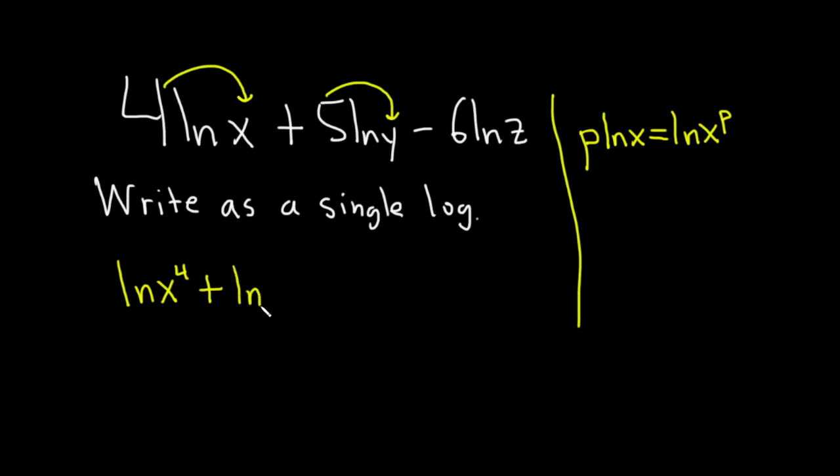And then there's a negative here. You could bring up the negative 6, but that just makes it more complicated. Let's just leave the minus sign there and bring up the 6 by itself. So this is the natural log of z to the 6.